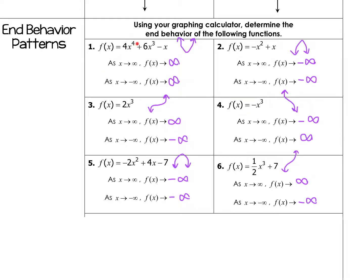The first one was to the fourth power so it had that parabola look: as x approaches positive infinity it goes towards positive, and as x approaches negative infinity it also goes towards positive infinity. The second was a cubic: as x approaches positive infinity y approaches positive infinity, and as x approaches negative infinity y approaches negative infinity. Number five goes both in the negative direction — both approach negative infinity. Number two is also cubic but has a negative, so it's reflected: as x approaches positive infinity it goes to negative infinity, and as x approaches negative infinity it goes positive. Number six is a cubic going in the parent function direction — positive and negative.